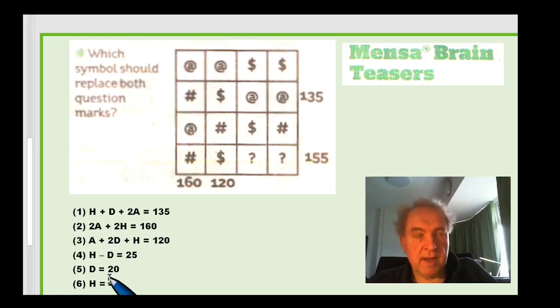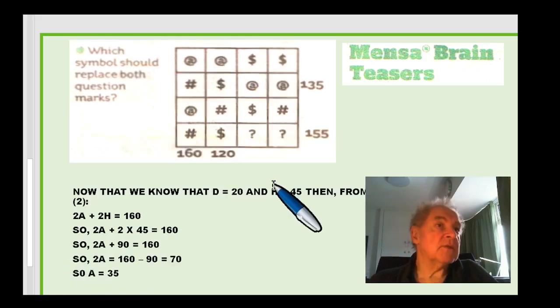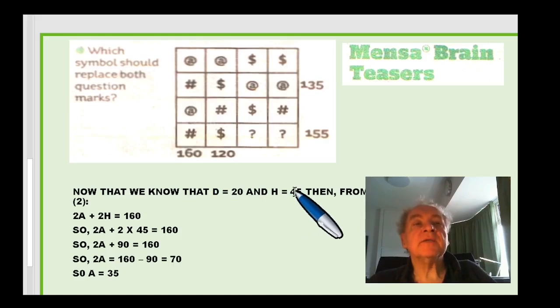What you can do now, I'll tell you, once you know d and you've got h, then finding a from any of these three original equations is going to be a cinch. So we know that d equals 20, we know that h equals 45. Then from two, I'm just picking two, because it's just got two symbols in, it's just easier.